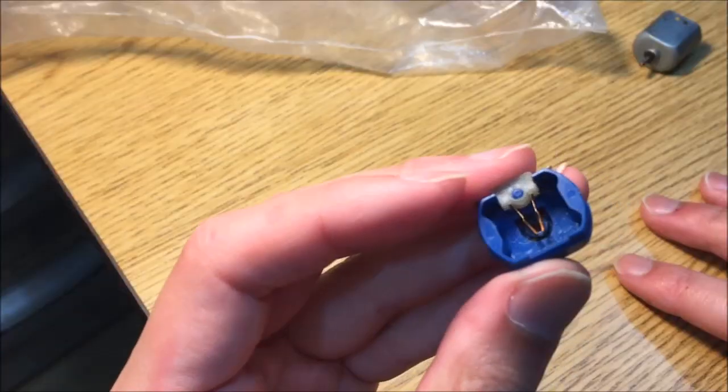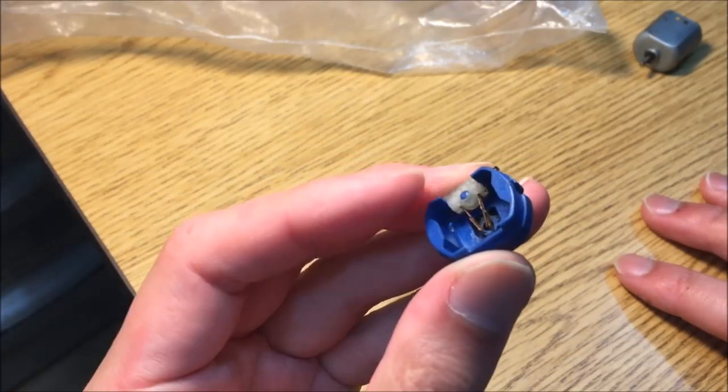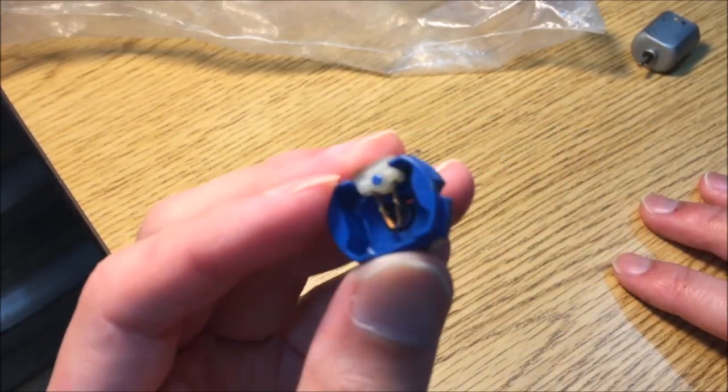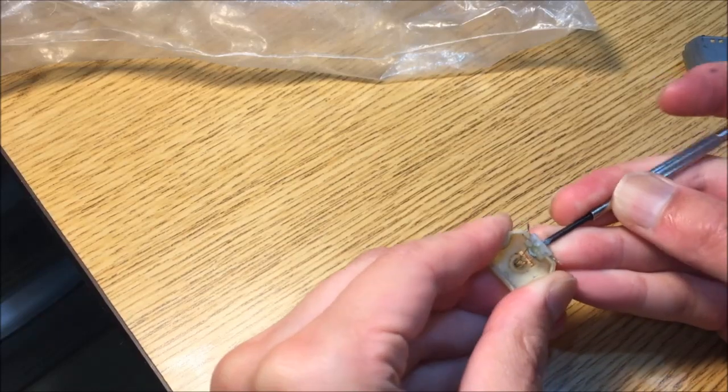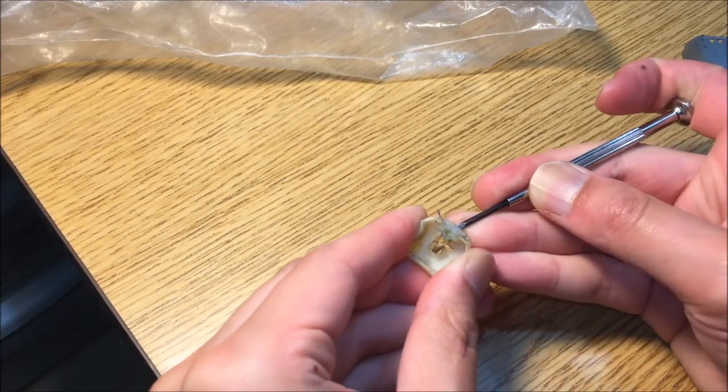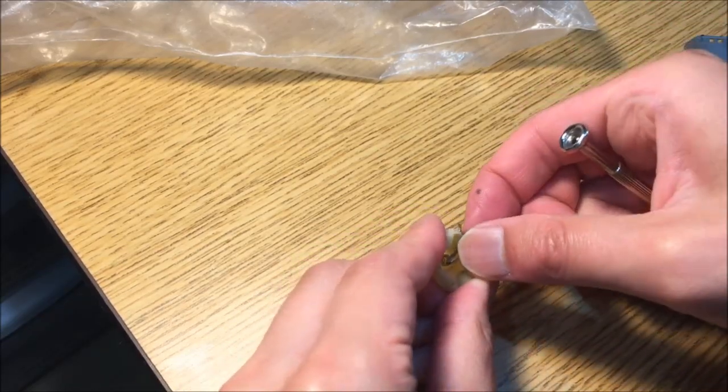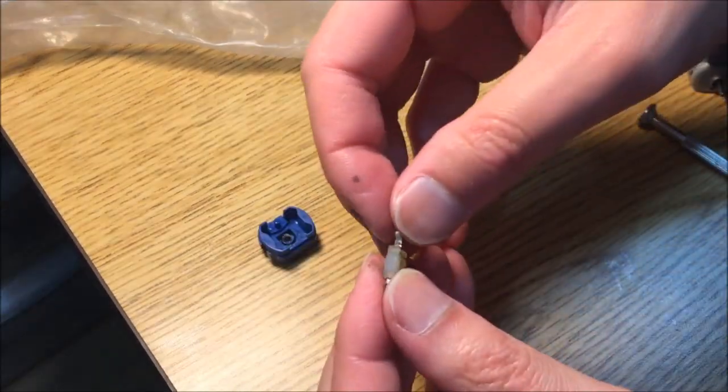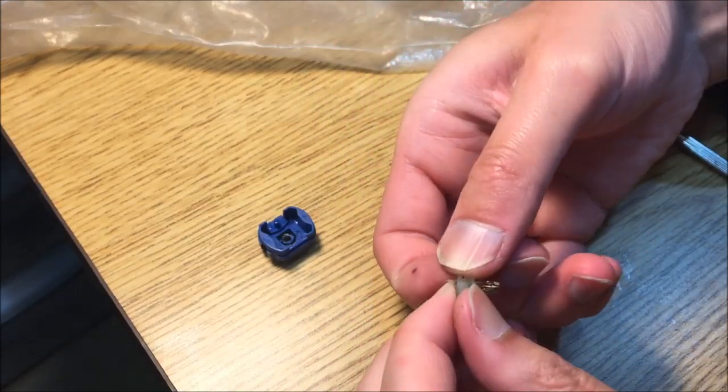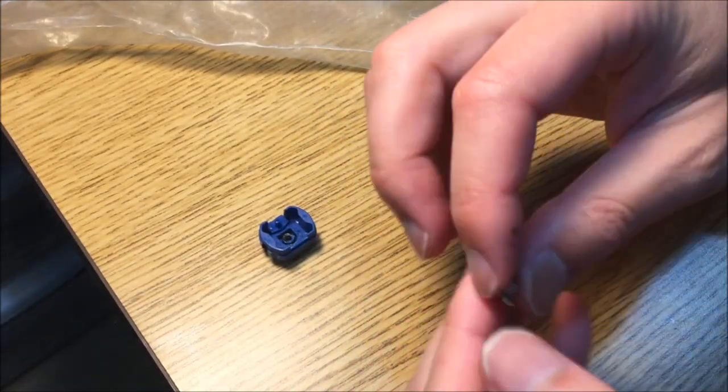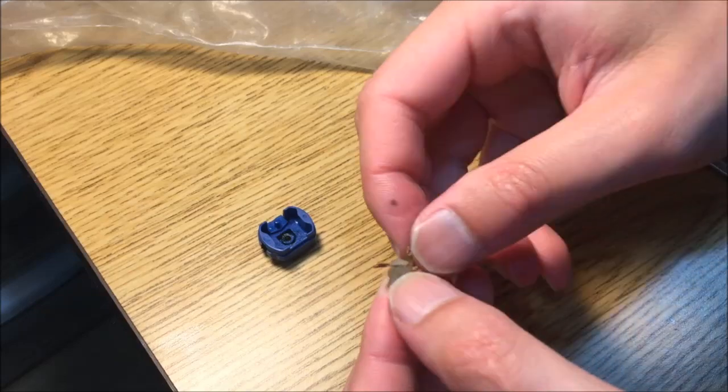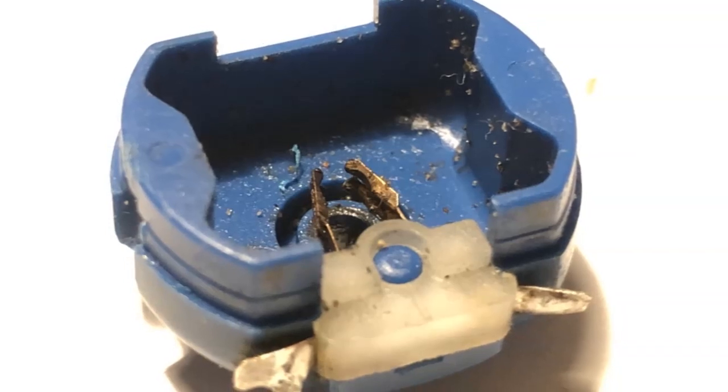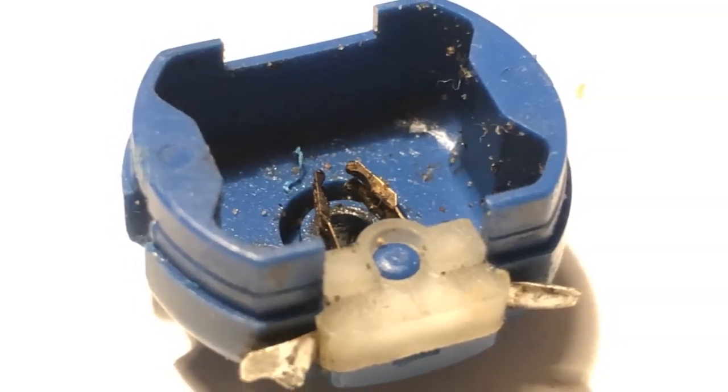I wanted to try to replace the seemingly worn-out commutators with sets from other similar-sized motors. After opening up a few, mostly from Tamiya kits, I discovered that most commutator assemblies simply press fit together and come apart easily. I had high hopes that a swap would work, but then I noticed that some working motors had much more commutator wear than the broken motors. So what gives?